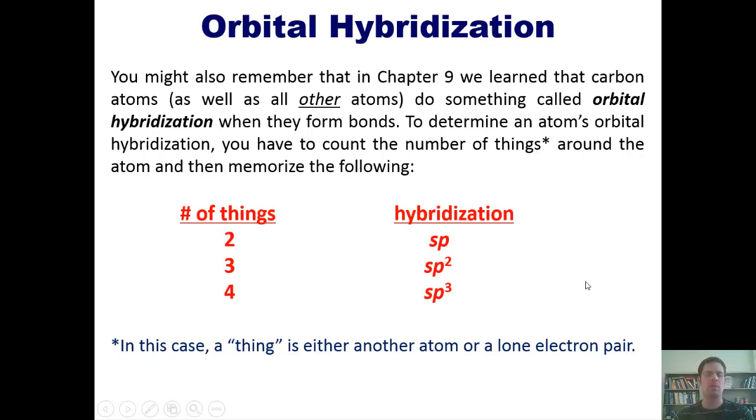So if your number of things around a central atom is two, then the hybridization is sp. You can count that, two fingers, sp. If the number of things around your central atom is three, then it's going to be sp2. If the number of things around your central atom is four, then its hybridization is going to be sp3. Make sense?